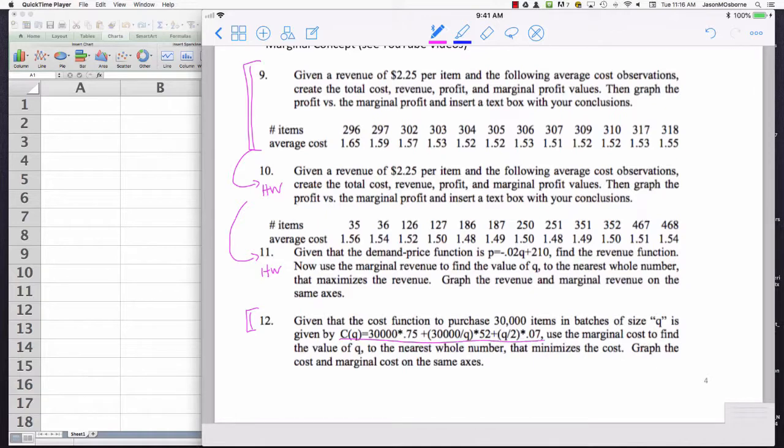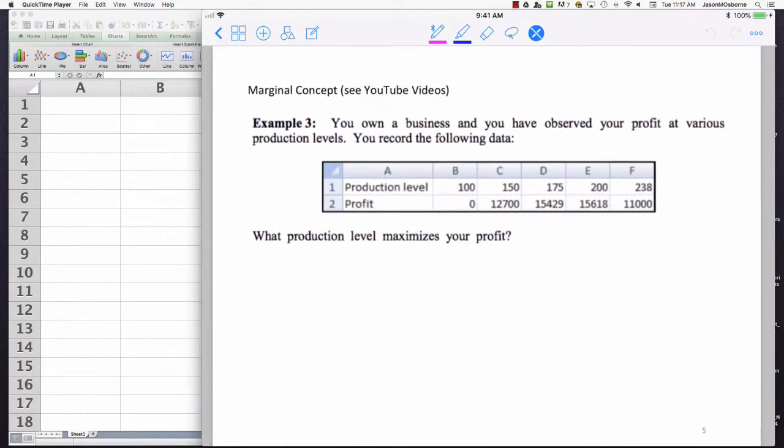Notice that in this problem, this is a cost problem. You've been given the cost function of thirty thousand times three-fourths plus thirty thousand divided by Q times fifty-two plus Q over two times zero point seven. This is some cost function that comes from business, and you can utilize the techniques that we illustrated in number nine to answer the questions about marginal cost. But instead of doing this problem I would like to illustrate this number twelve using a profit function.